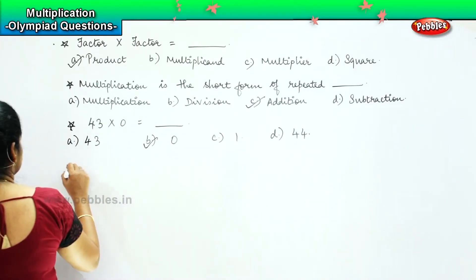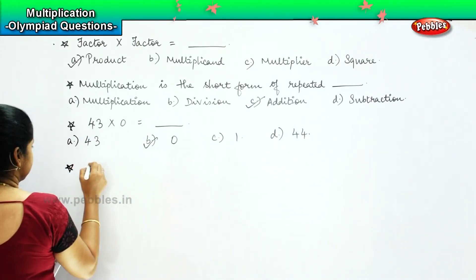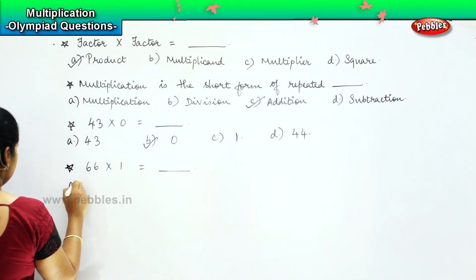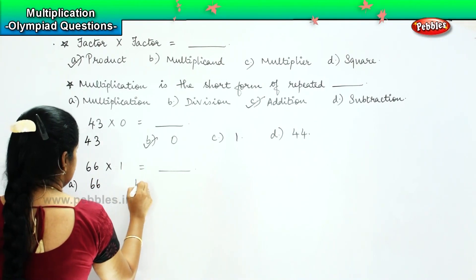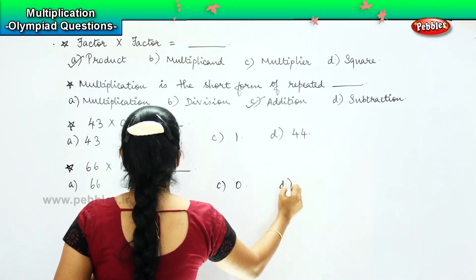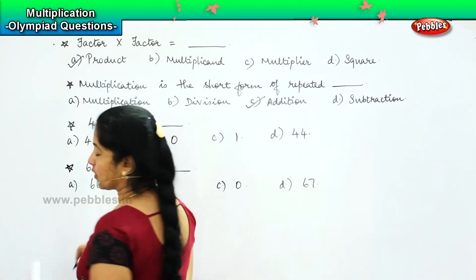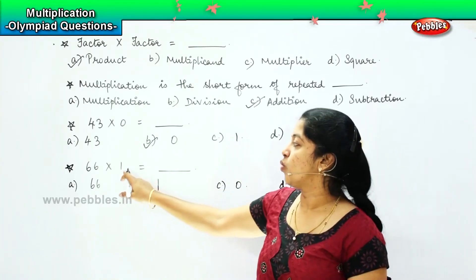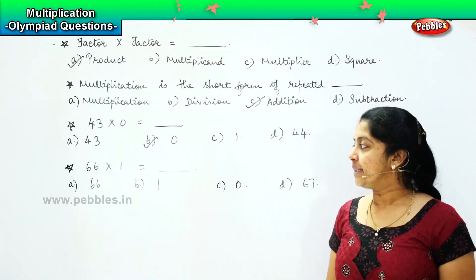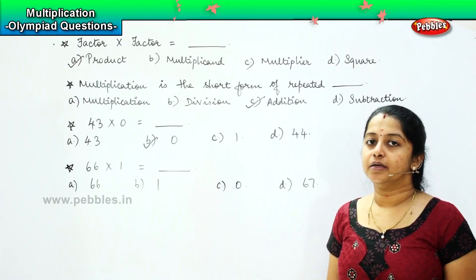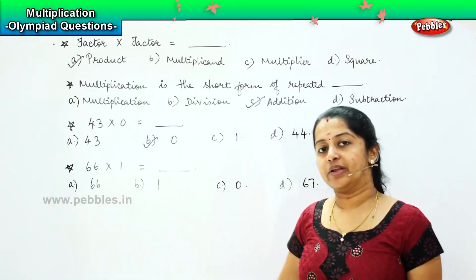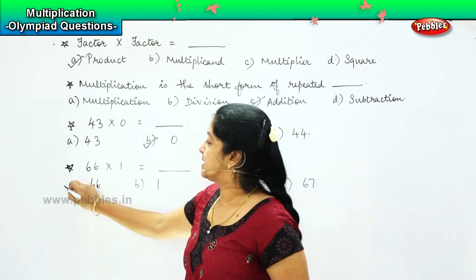Here is your next question: 66 into 1 is equal to dash. Your options are: A) 66, B) 1, C) 0, and D) 67. This is the second property of multiplication — anything multiplied by 1 will be the number itself. So 66 multiplied by 1 will be 66, which is option A.